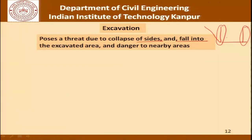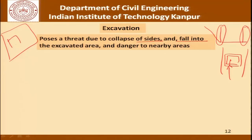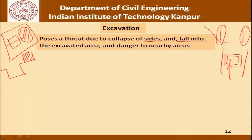Fall into the excavated area means that if an excavation has been created at a construction site, unless the area is barricaded, somebody walking nearby can fall into the pit — whether a person or equipment. As for danger to nearby areas, excavation can affect existing construction in adjacent areas because earth supporting those structures is being removed. Issues relating to overburden have to be borne in mind by safety personnel; it could endanger nearby buildings or trigger collapse of the site.